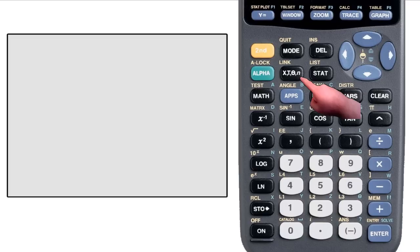This key next to the alpha key, which says X, T, Theta, N, is the button that you'll usually want to use to store a value. Pressing it will put an X on the home screen if you're in function mode. If you're not in function mode, you can change to func in the mode menu.